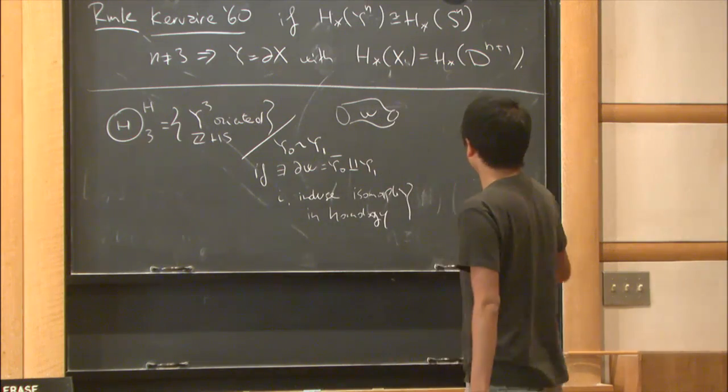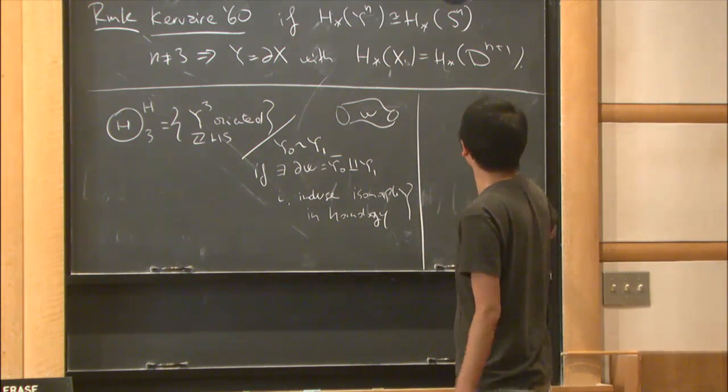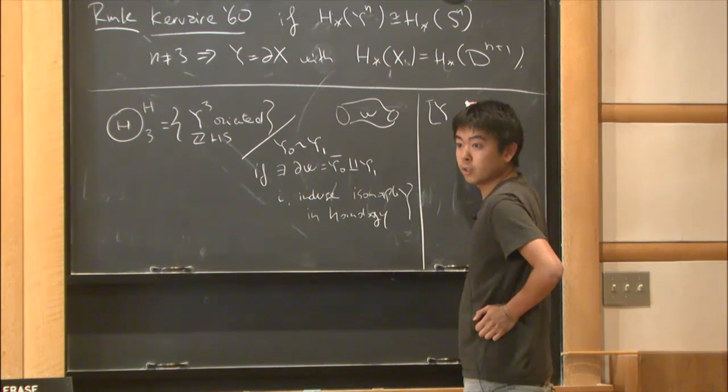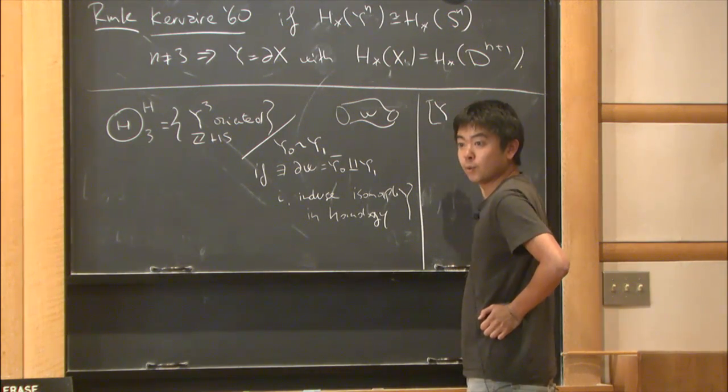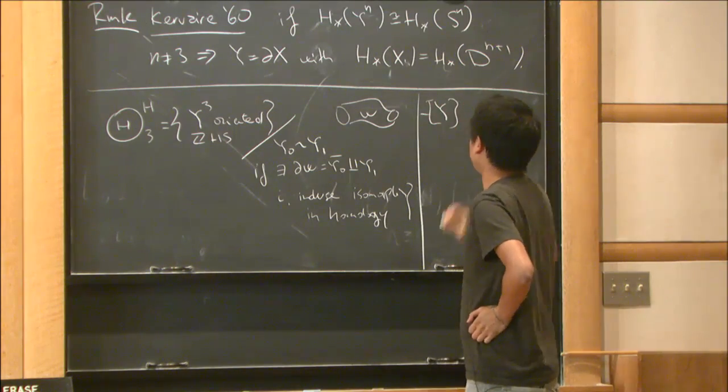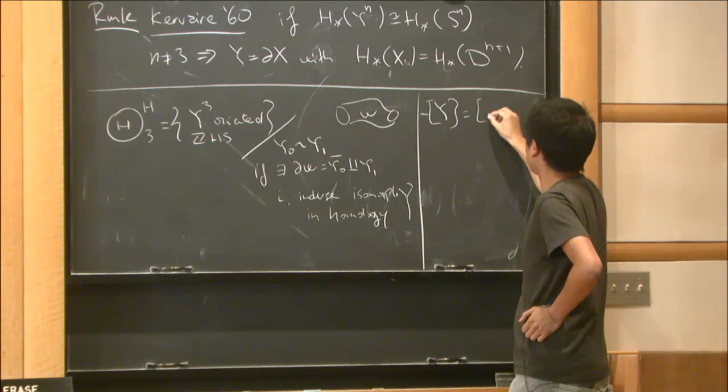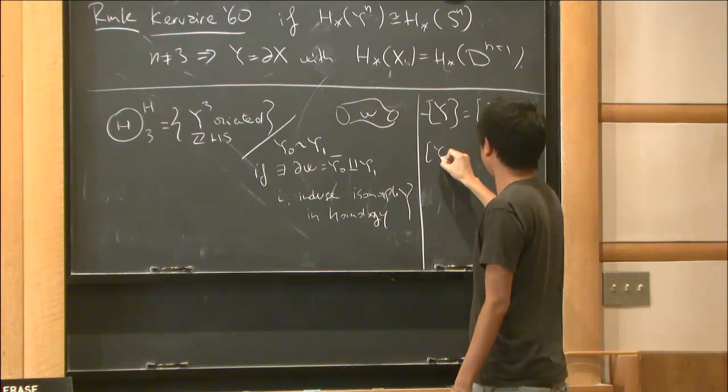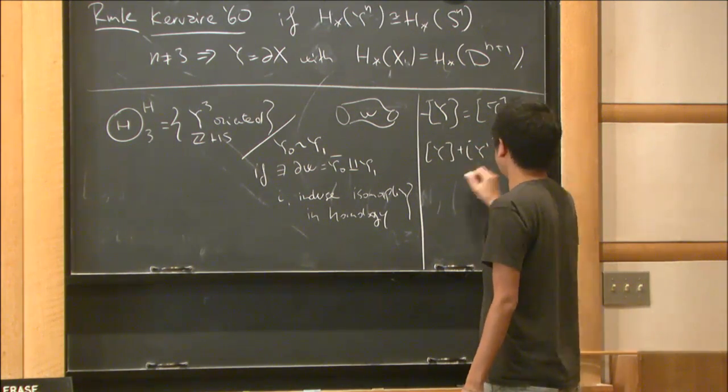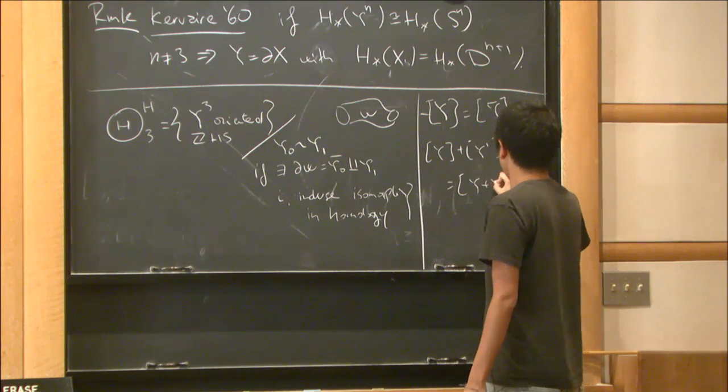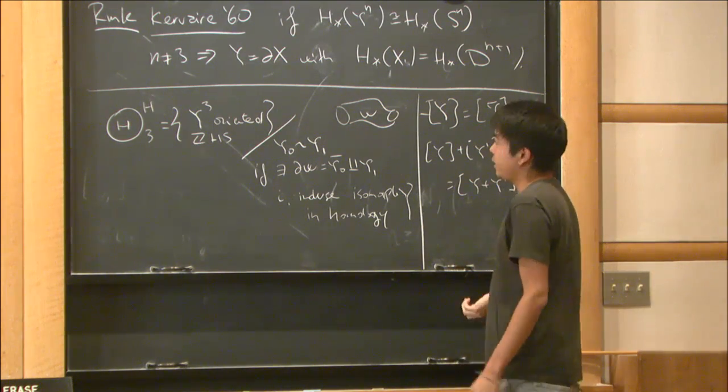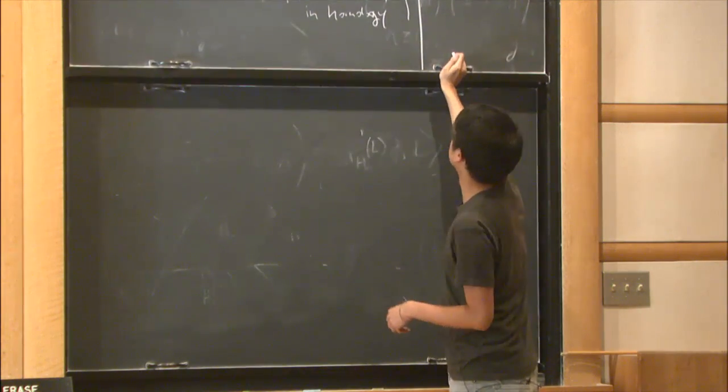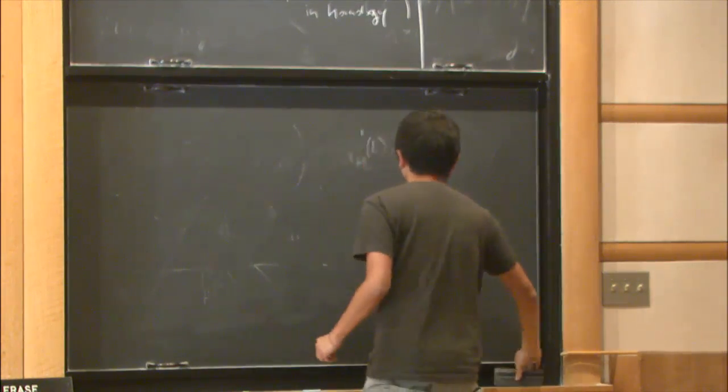This is a group. If I have the class of Y, minus the class of Y is the class of Y with opposite orientation. The sum of two classes is the class of the connected sum. The zero element is S³. We have to check that this is well-defined, of course.